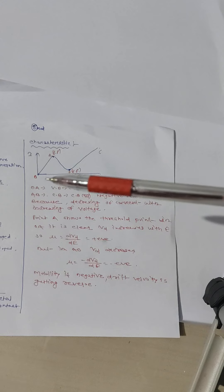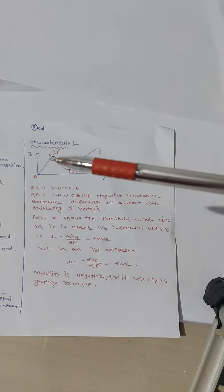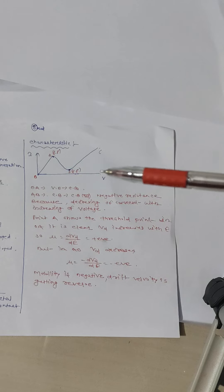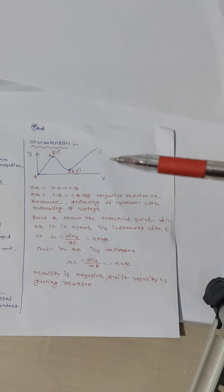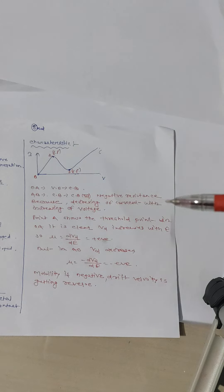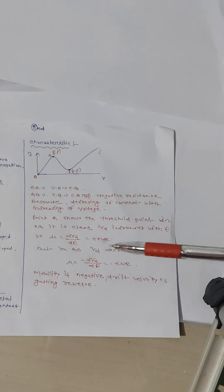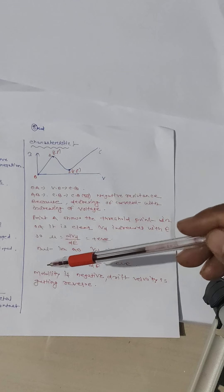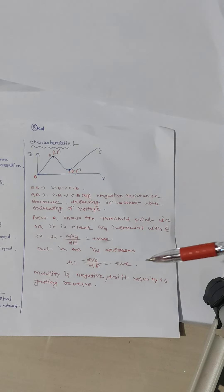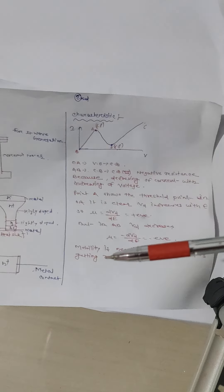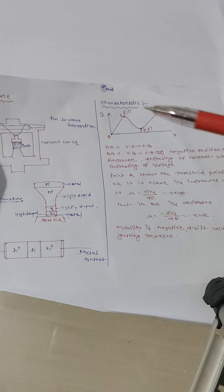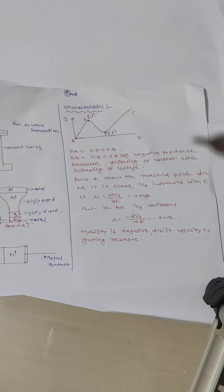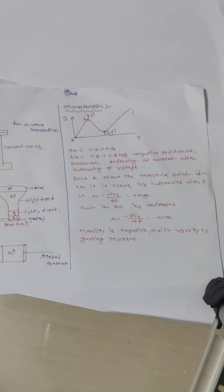Reviewing the characteristic: the OA region shows electron transfer from the valence band to the conduction band. Point A is the threshold point, after which everything changes — resistance becomes negative, mobility becomes negative, and drift velocity reverses. Mobility equals dv/dE, which is positive from O to A, but negative from A to B. The Gunn diode is the device based on the Gunn effect — characterized by negative resistance, negative mobility, and reversal of drift velocity.